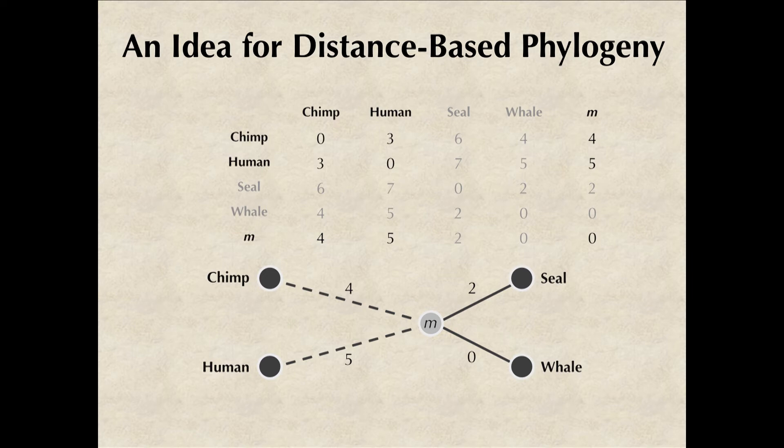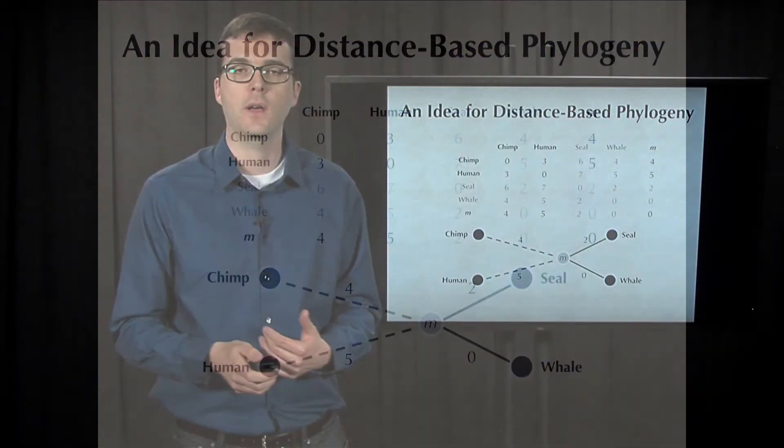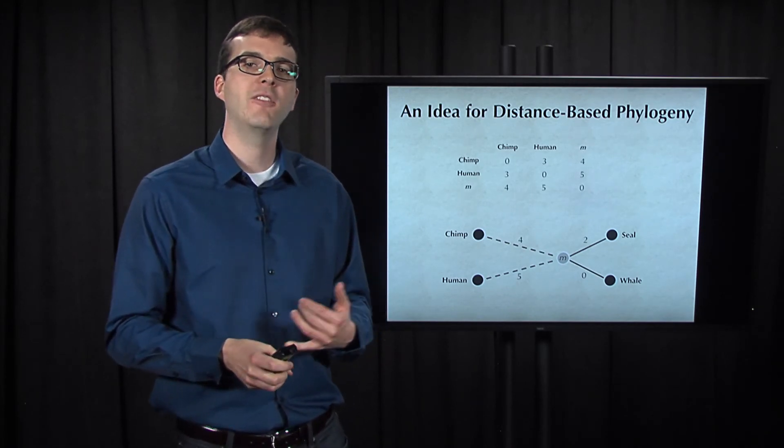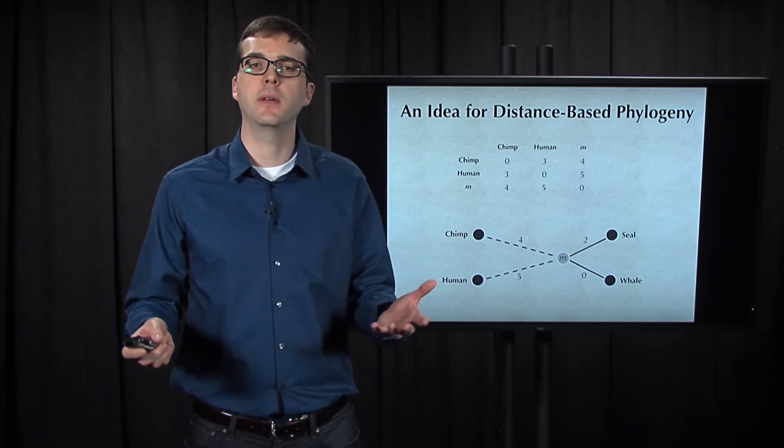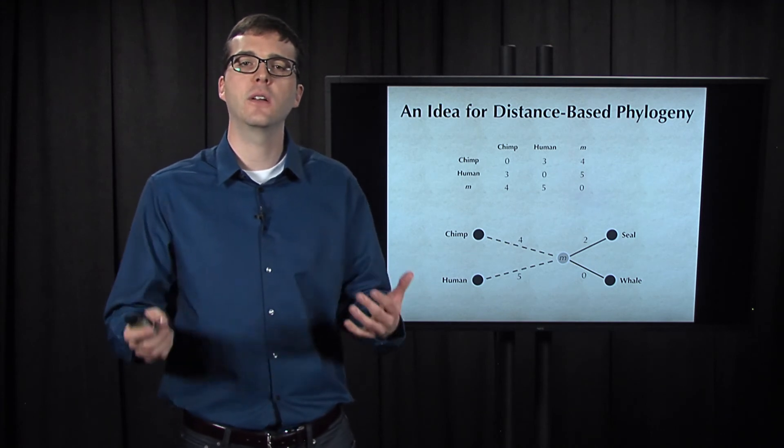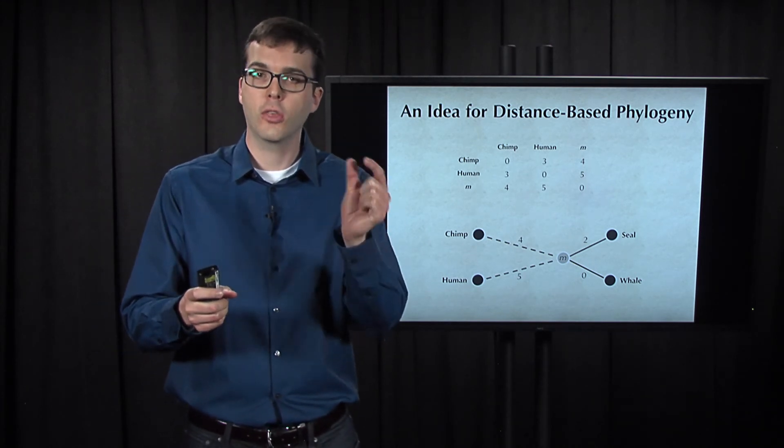This allows us to add a new row and column to the distance matrix corresponding to m. And because we have essentially already added seal and whale to the tree, we can now ignore these columns. In fact, let's just get rid of them completely.